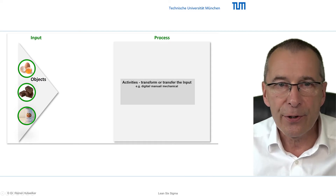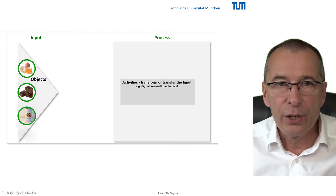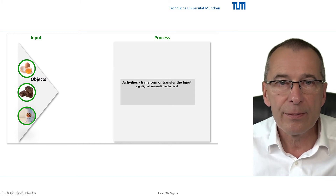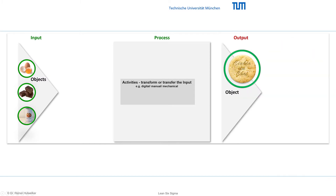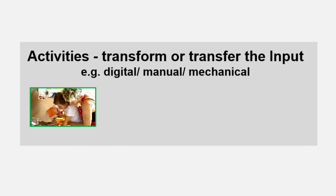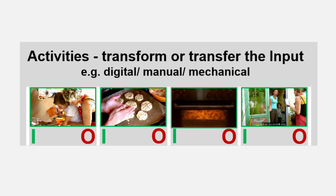Besides the transformation of inputs into outputs in creation processes, the transfer of objects is also relevant when we transfer an object from an input location to an output location. It does not matter whether we transport our cookies from the bakery to the customer or transmit data in a wire. Value is created by changing an attribute — the location of the object. In business processes, the transformation of inputs to outputs is rarely accomplished by a single activity. In our bakery, we could observe our chef mixing the ingredients, shaping, then baking the cookies and finally delivering the tin with the cookies. Each of these discrete activities in turn requires an internal or external input and transforms it to an intermediate or final output by changing or adding attributes.